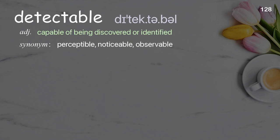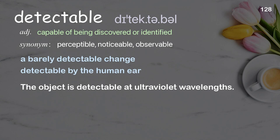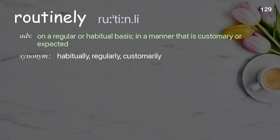Detectable: capable of being discovered or identified. Examples: a barely detectable change; detectable by the human ear; the object is detectable at ultraviolet wavelengths.